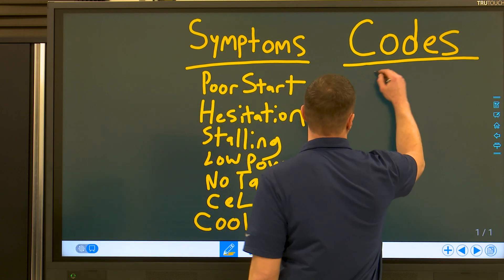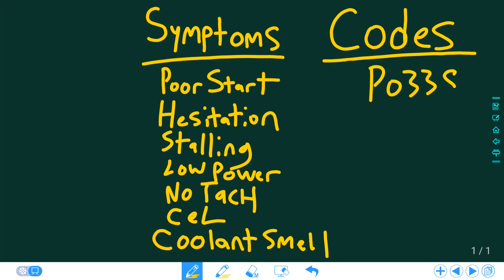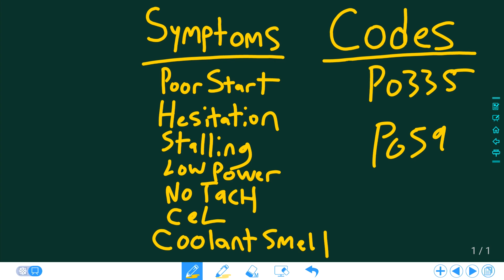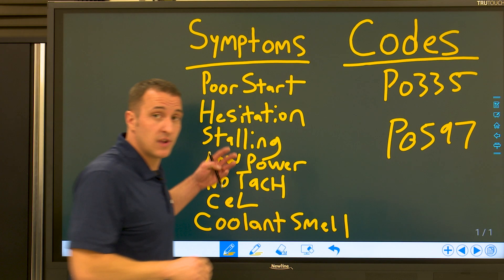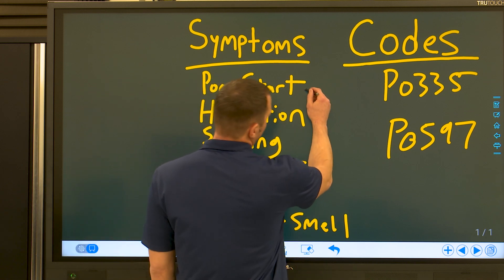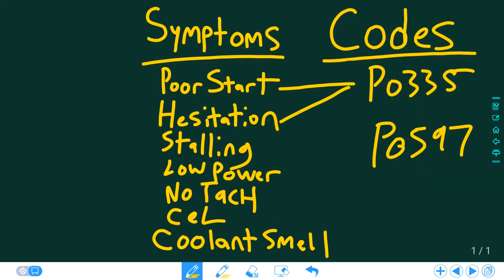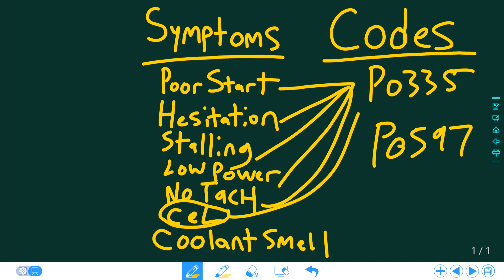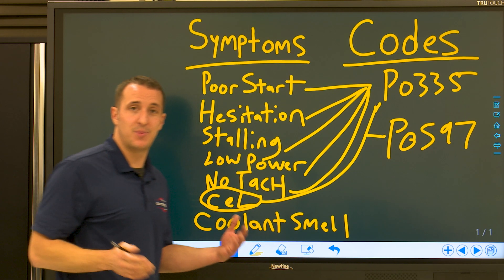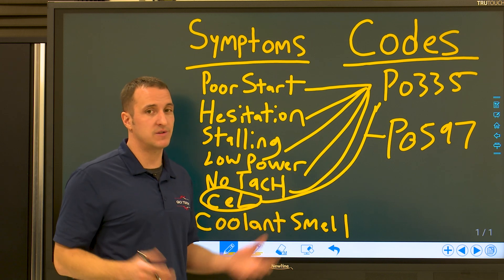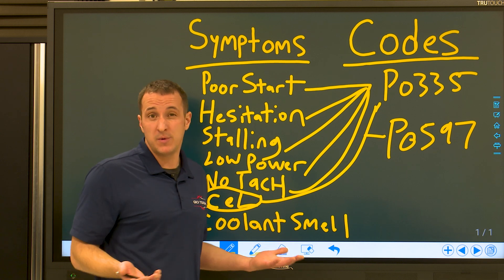Let's start by getting our codes written in here — we've got a P0335 and a P0597. So let's group these together. Poor start — definitely could be caused by a bad crank sensor; I don't think the thermostat heater circuit is going to cause that. Same with hesitation, stalling, low power, and no tach. The check engine light can obviously be caused by both of these problems. And coolant smell — you might want to put that with the thermostat, but remember, this is a circuit code, and circuit codes aren't going to cause a coolant smell. So maybe we have a leak somewhere that we'll need to look into further.